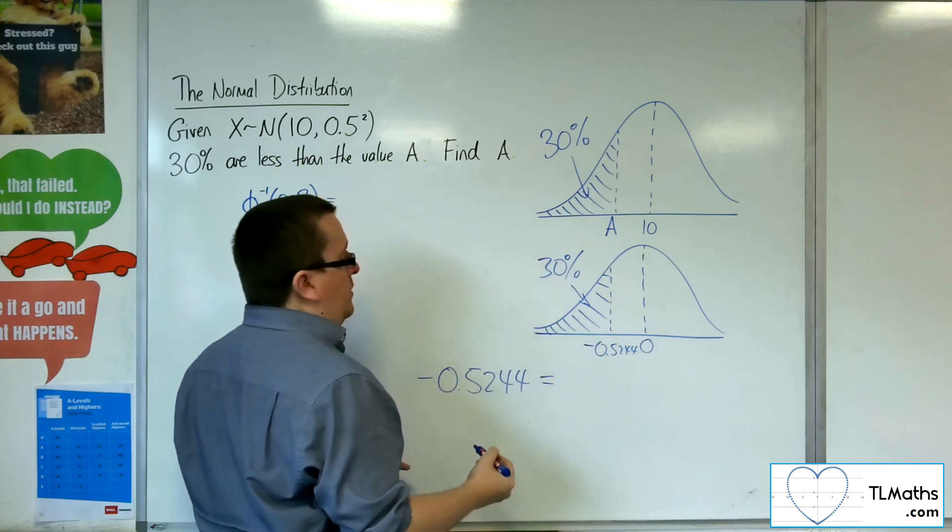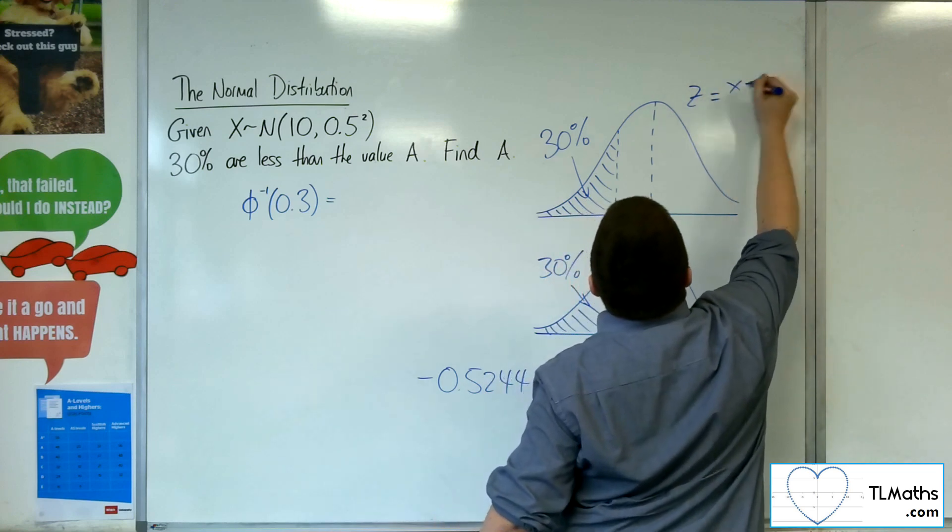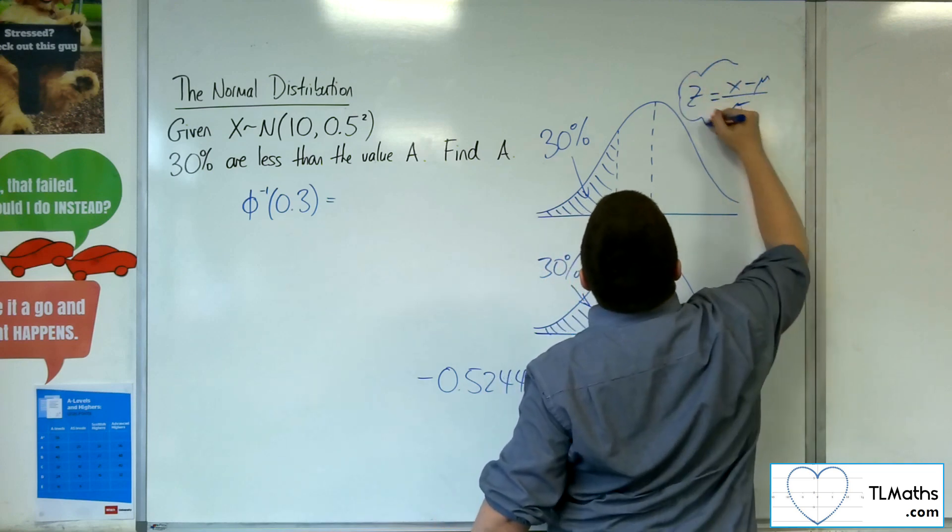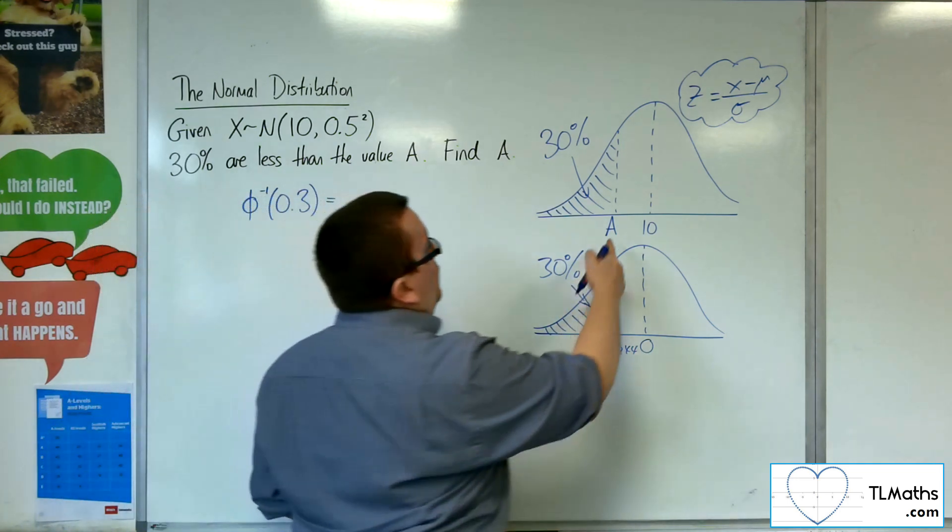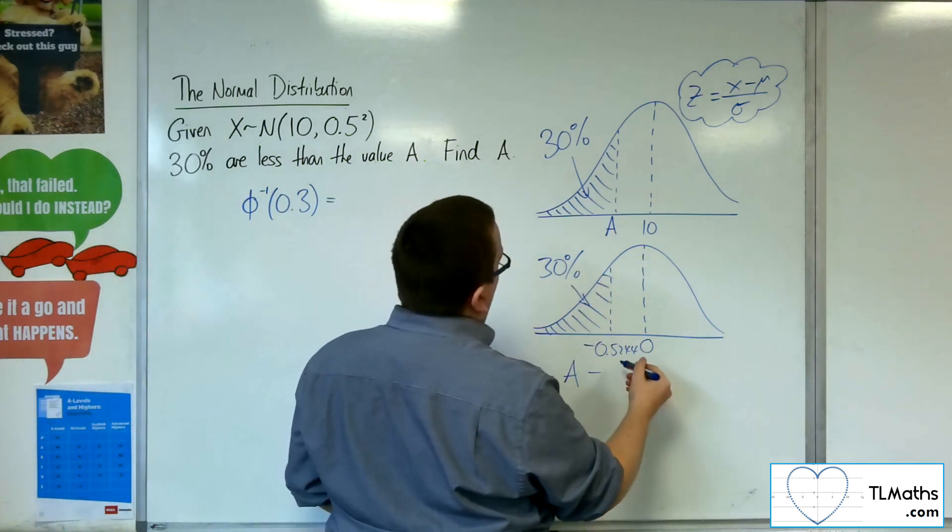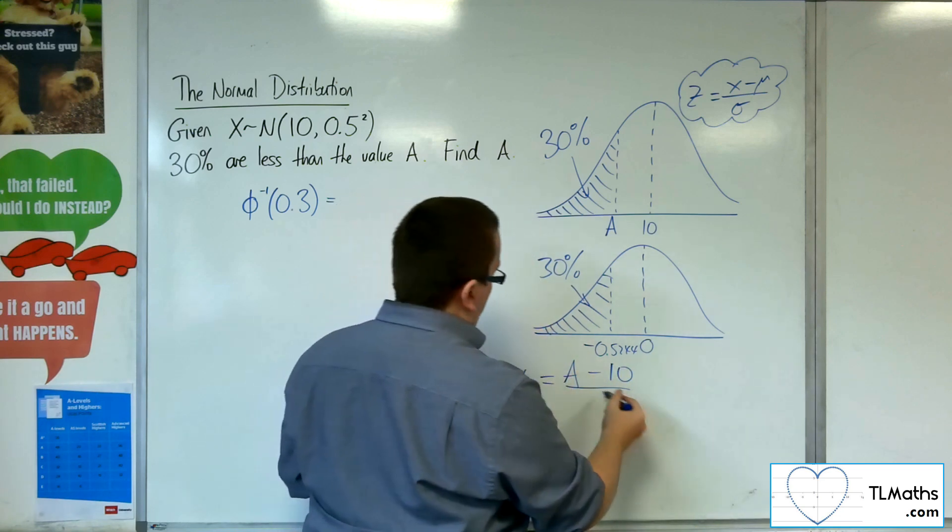which is equal to, using the formula, z equals x minus mu over sigma, the x-value that we're looking for, the A, take away the mean, which is 10, and divide it by sigma, which is 0.5.